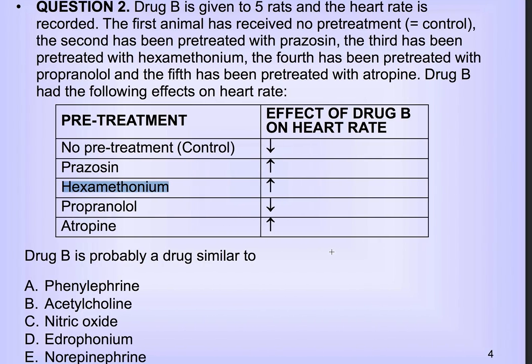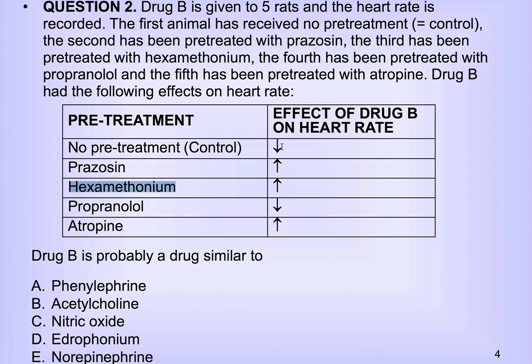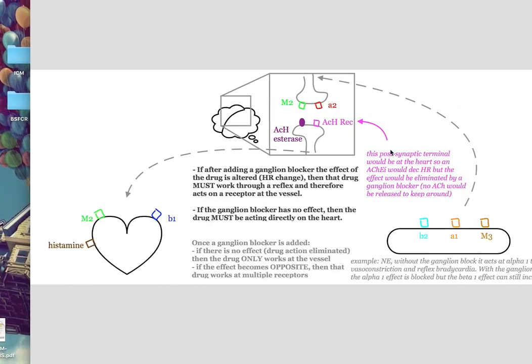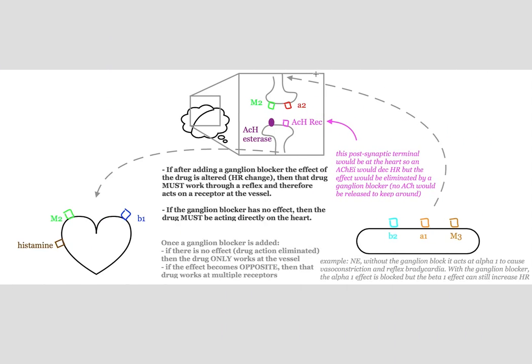What does this mean? If this drug causes a decreased heart rate, but then I block the ganglion, it's still able to work over here when it's blocked — I still get an effect. So that means it has to work at one of these receptors and one of these receptors. You should be thinking something like norepi or epinephrine at high or low dose, because those can work at alpha or beta receptors depending on their dosage.